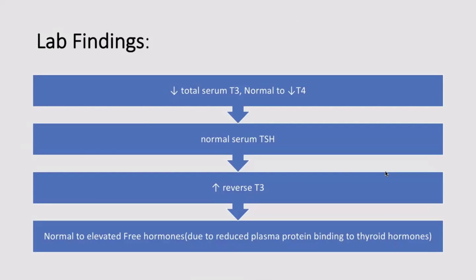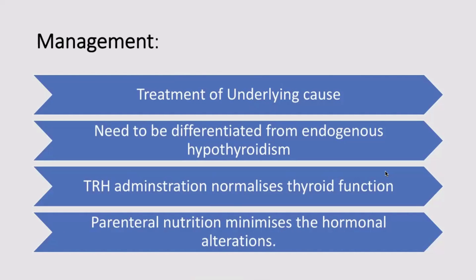The lab findings are: decreased total serum T3 is present in all cases. Some cases show normal or mildly decreased total T4, which may be due to reduced plasma protein binding to thyroid hormones during the inflammatory process. Free T4 may be elevated to normal. Reverse T3 is invariably elevated and is an important diagnostic feature. Serum TSH is generally normal in most cases.